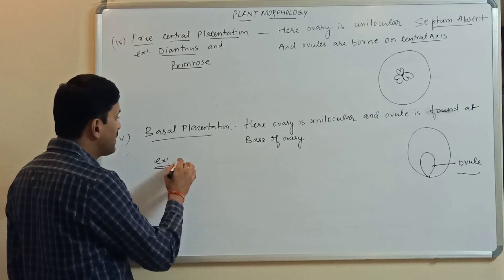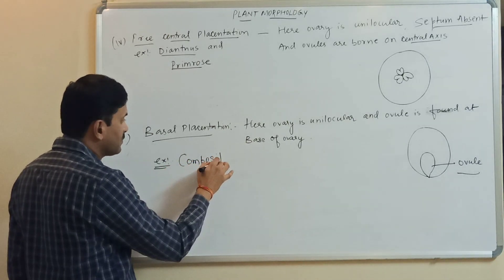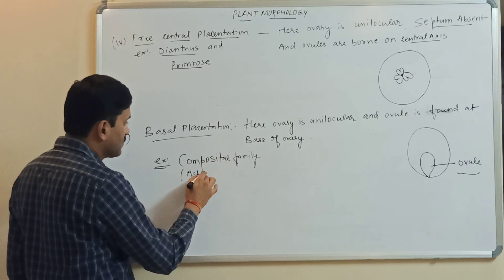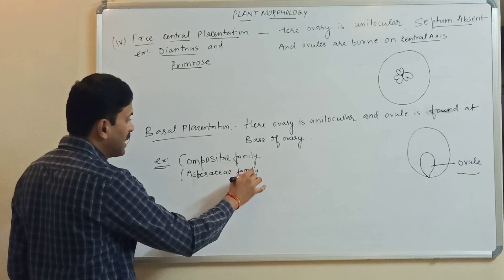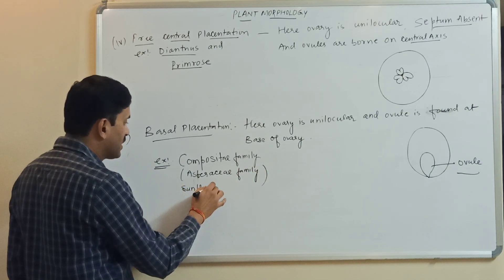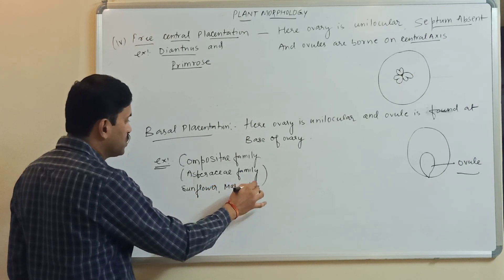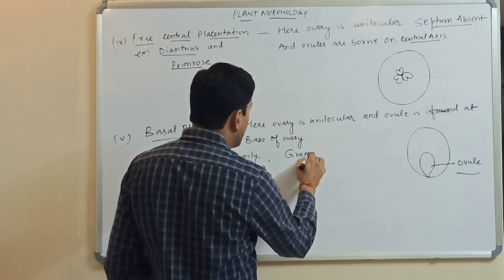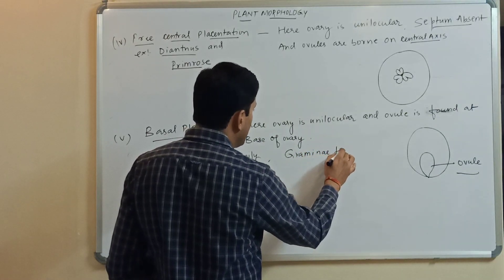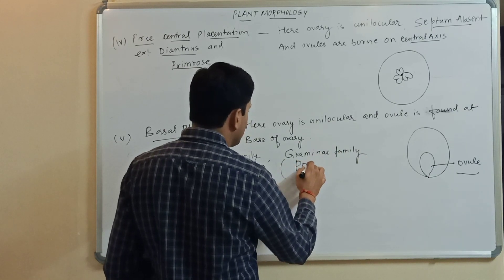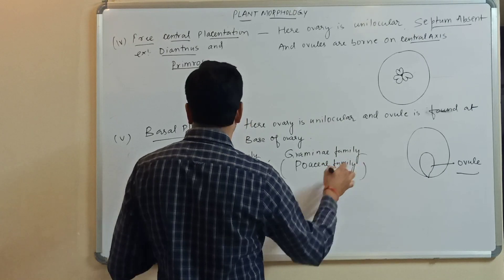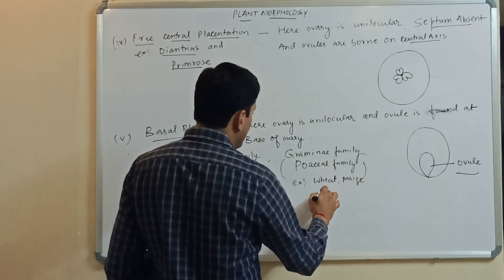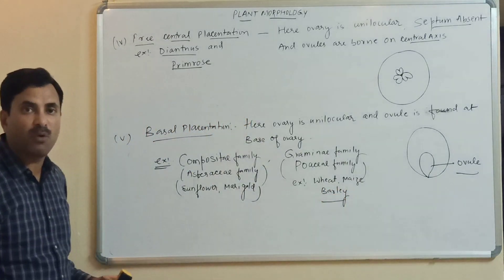The best example of basal placentation is the Compositae family, also called Asteraceae. For example, sunflower and marigold belong to the Asteraceae family and have basal placentation. Additionally, the monocot family Gramineae, also called Poaceae, also shows basal placentation. Wheat, maize, and barley all have basal placentation.